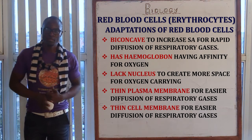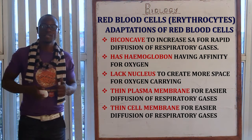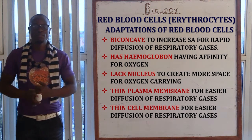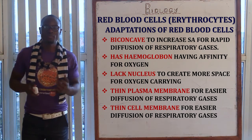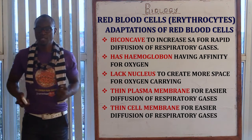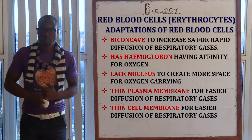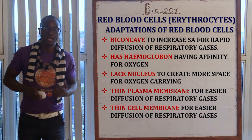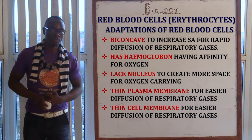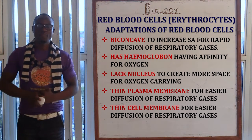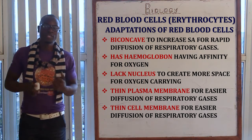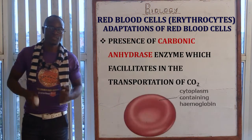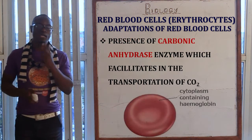The red blood cell contains hemoglobin, which has a very high affinity for oxygen and its transportation and absorption. The red blood cells also lack a nucleus, as this creates more space for carrying the respiratory gases, whereby the main one is oxygen. The red blood cell also has a very thin plasma membrane for easier diffusion of the respiratory gases, specifically oxygen and carbon dioxide.